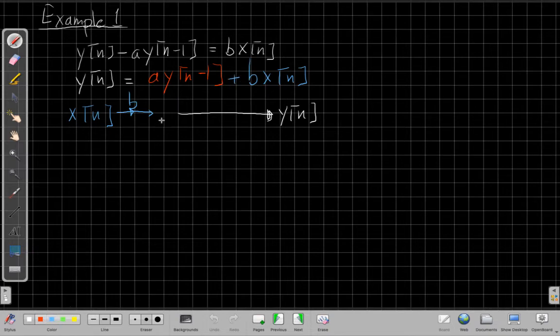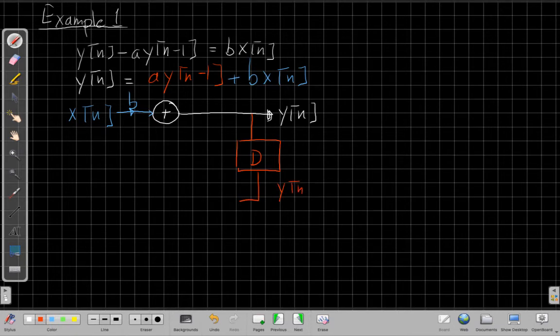And then what do I do to that b? Well, I need to add it to something. So it looks like a good place to put an adder. And what I need to add it to is, well, I need to add it to a version of the output that's been delayed by one sample and then scaled. So if I draw that, I could say, well, here's a delay box. So the output of this will be y of n minus 1. And then I'm going to apply a gain of a to that and add it to b of n. So there is my block diagram.